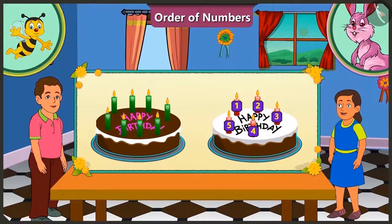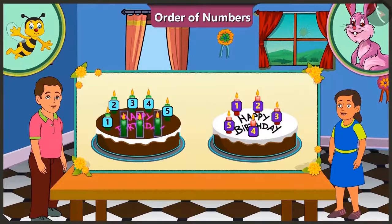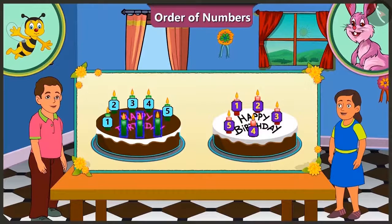And Bunty's candles: 1, 2, 3, 4, 5 candles — and we can see 3 more candles in Bunty's cake. That means the number of candles in Bubbly's cake is lesser than the number of candles in Bunty's cake. Bunty has 3 more candles. Bubbly has a total of 5 candles.